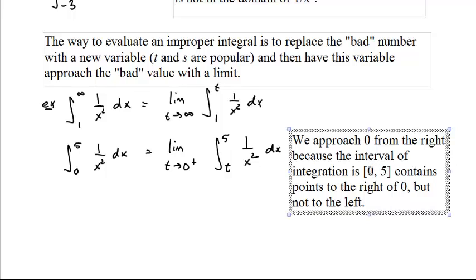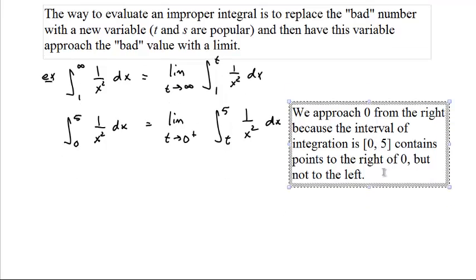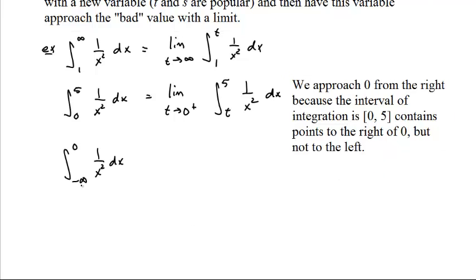If the 5 was bad, we would approach the 5 from the left. Let's see. Okay, what do you do when two things are bad? We can't plug in negative infinity and 0 is not in the domain. What do we do? We replace both of them. Let's say replace the 0 with t and the negative infinity with s and we have t go to 0 from the left because our integral of integration goes all the way up to 0 so we can approach it from the left. And we have s go to negative infinity.